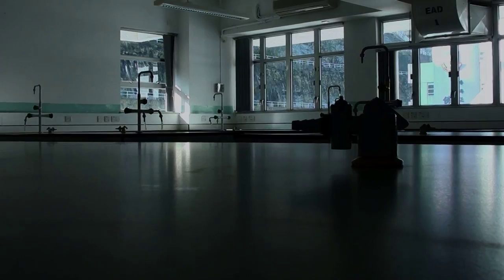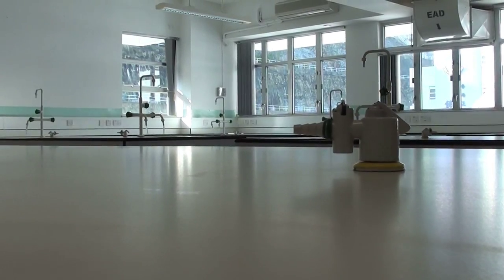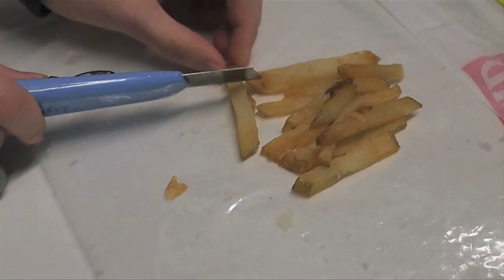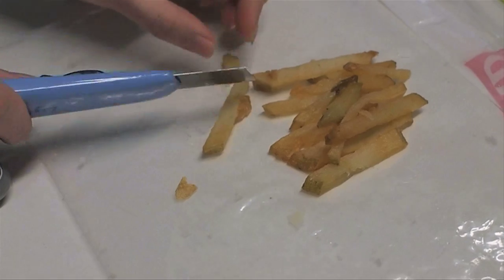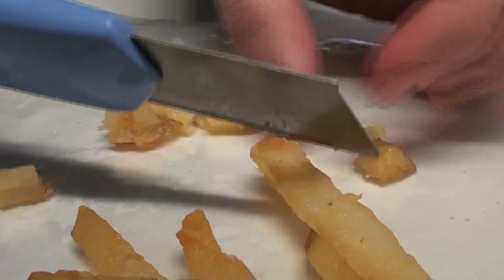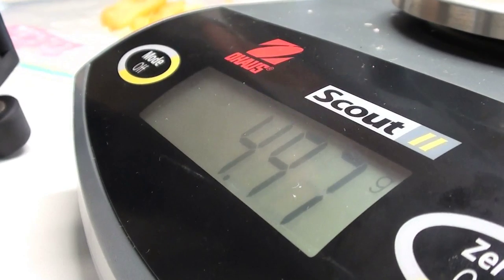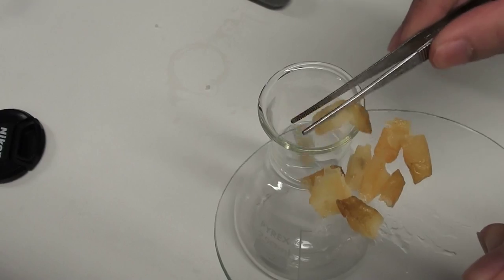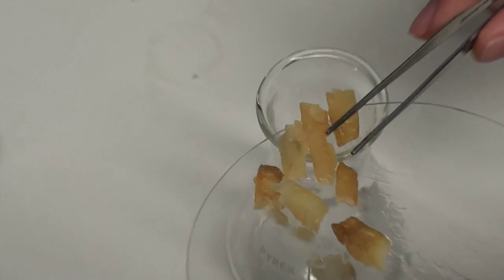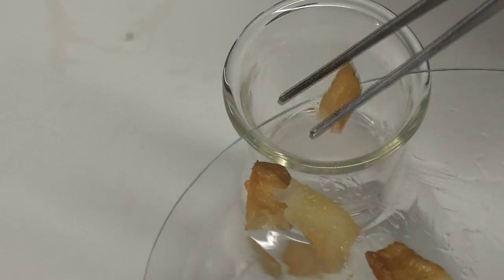In this experiment, we will extract fat from deep-fried potato. We've prepared some homemade fried potato with corn oil. We have cut out 5 grams of deep-fried potato from it. Then, we place it into a 250 ml dry flask.